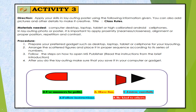For Activity 3, apply your skills in layouting a poster using the information given. You can also add pictures and other details to make it creative. The title is 'Class Rules.' Materials needed: computer, desktop, laptop, tablet, or high-calibrated Android cell phone. In layouting your poster, apply proximity, alignment, repetition, and contrast. Procedure: prepare your preferred gadget; arrange the scattered figures in proper sequence according to each series of numbers; follow the steps to open MS Publisher; and after layouting, save it in your computer or gadget.